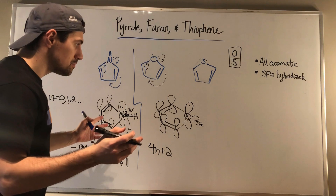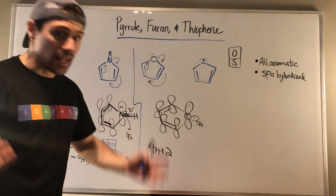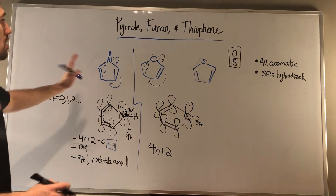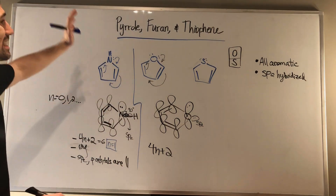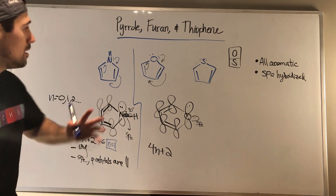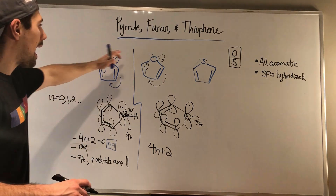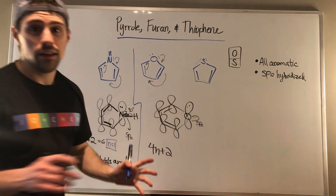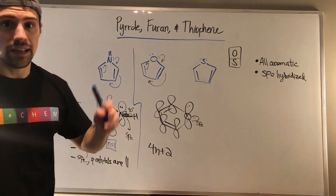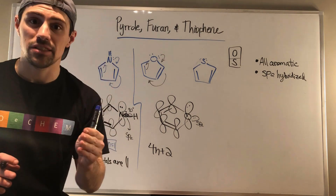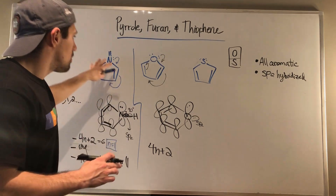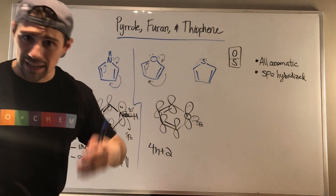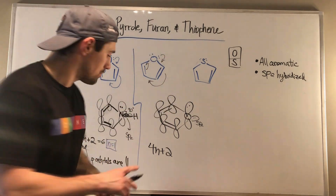So this oxygen right here is housing that extra electron pair in an sp2 orbital. That's it — that's the magic. Just know that even though they seemingly look sp3, the heteroatoms in these rings are in fact sp2. These three are in fact aromatic.